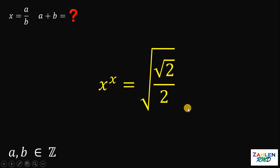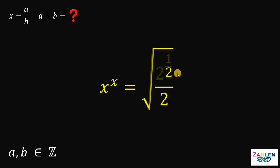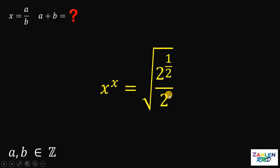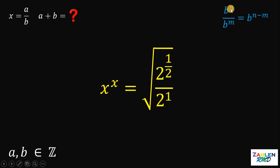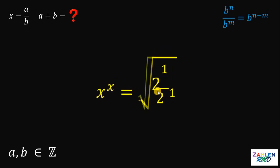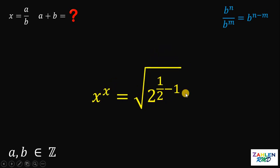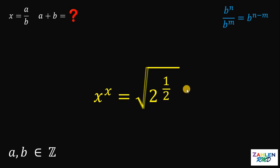The first thing to do is we need to simplify the right-hand side to make it equivalent to a number raised to the same number. Take note that square root of 2 is just 2 raised to 1 half, and the exponent of 2 on the denominator is just 1. Recall that b raised to n over b raised to m is equivalent to b raised to n minus m — this is one of the laws of exponents. Therefore, the expression inside the radical sign is equivalent to square root of 2 raised to 1 half minus 1, and 1 half minus 1 is just negative 1 half.